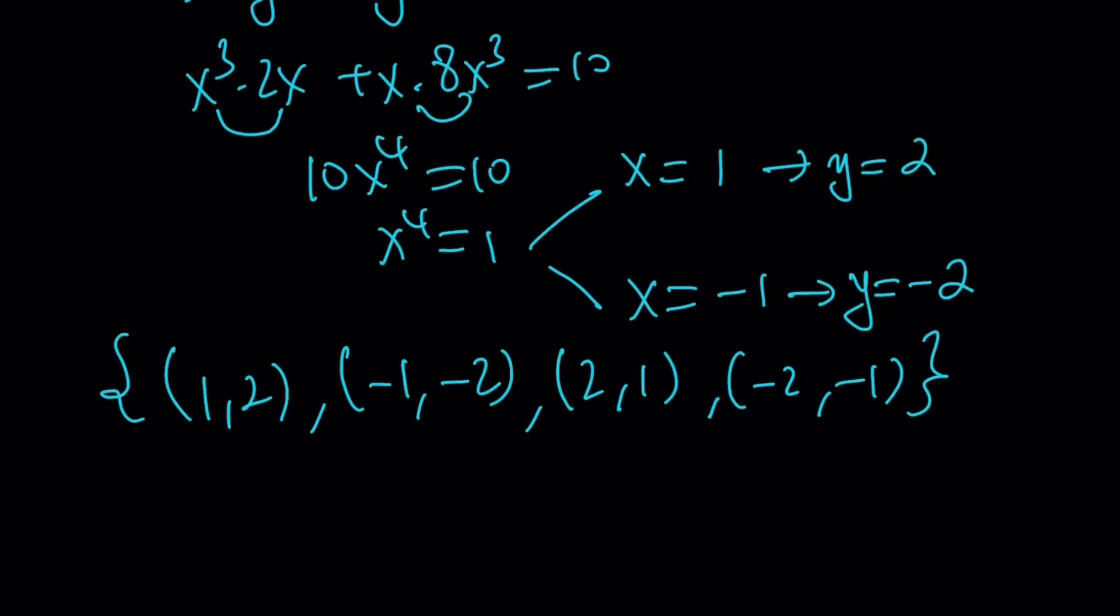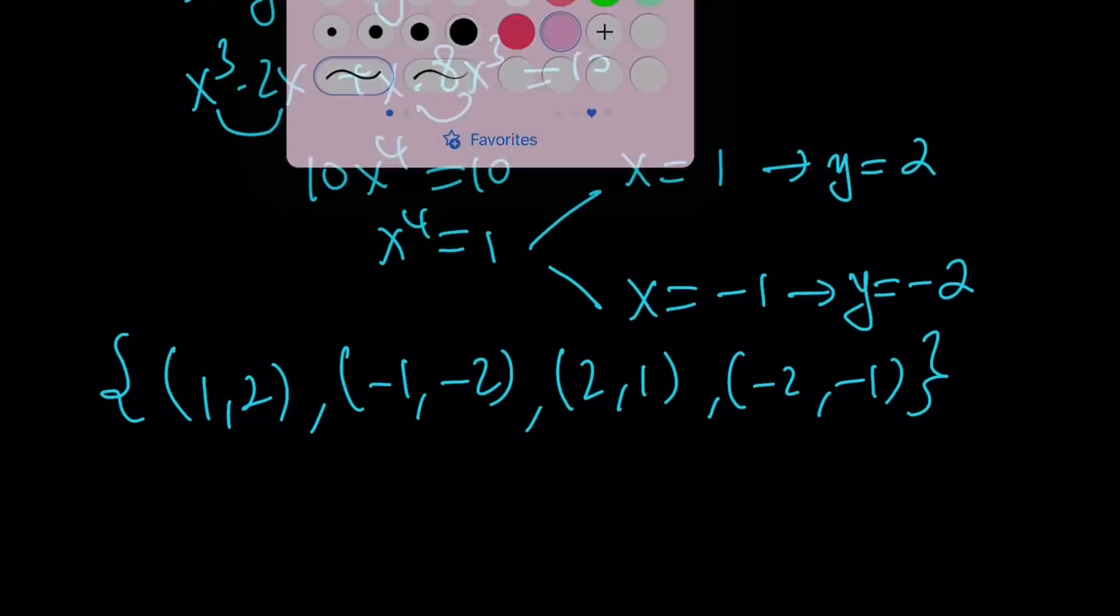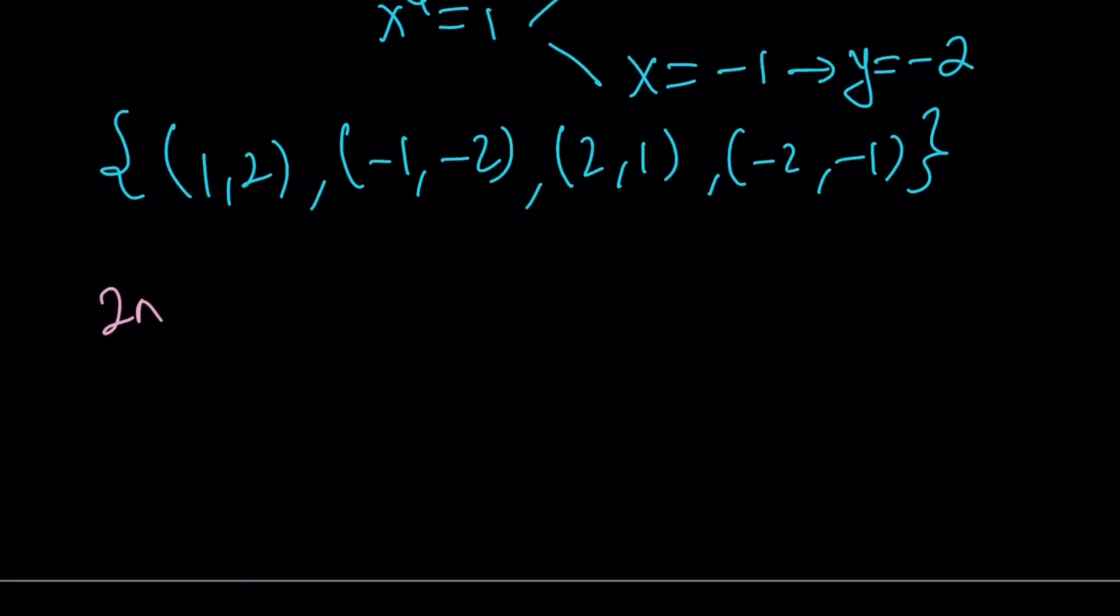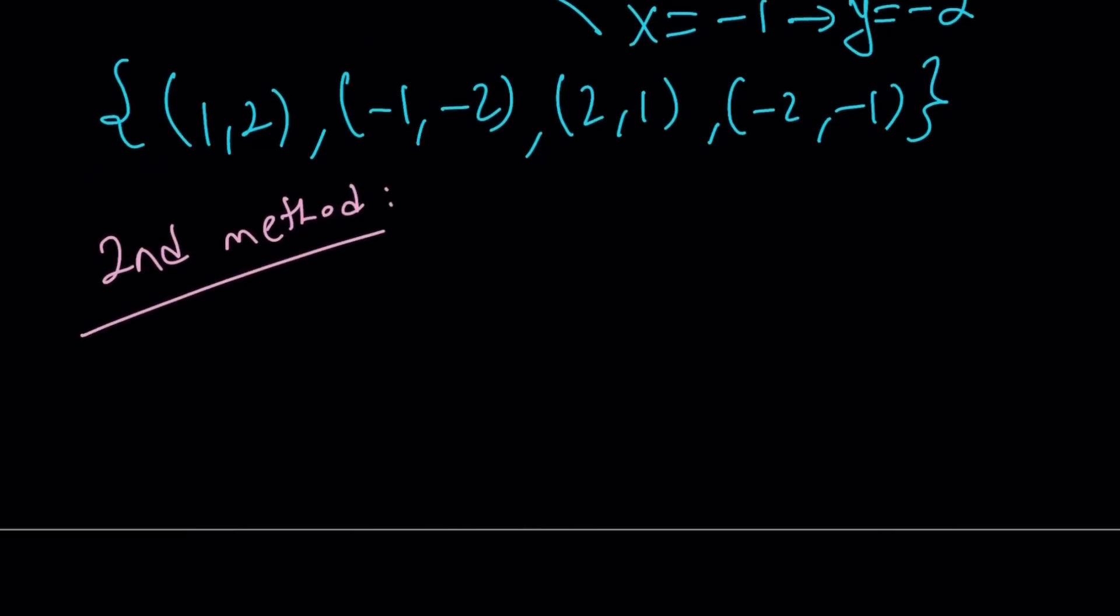But, since x and y are interchangeable, this also means that 2, 1 is a solution and negative 2, negative 1 is also a solution. And let's go ahead and take a look at the second method now. This brings us to the end of the first method. So, the first method is basically looking at it from a homogeneous equation perspective. And using the substitution y equals kx, which is almost always used with homogeneous equations. Now, let me rewrite the system. x cubed y plus xy cubed equals 10. And the second equation is x to the fourth plus 6x squared y squared plus y to the fourth equals 41.